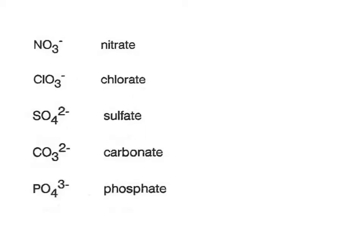Now let's add a few more — five of the most common ones we use. Nitrate: NO3 with a negative one charge. Chlorate: ClO3, again three oxygens with a negative one charge. Sulfate: SO4 with a two-negative charge. Carbonate: CO3 with a two-negative charge. And phosphate: PO4 with a three-negative charge. Notice the name indicates which element we're starting with — nitrate has nitrogen, chlorate has chlorine, sulfate has sulfur, carbonate has carbon, and phosphate has phosphorus.